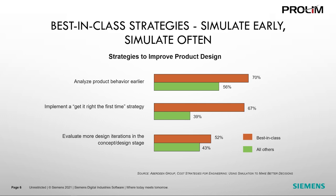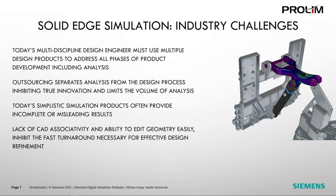Analysis of best-in-class performers indicates a strategic emphasis on using simulation to gain better insight into the behavior of the product. Introducing simulation at the beginning of the design process is a key differentiator for success. The best-in-class are also likely to implement a 'get it right the first time' strategy, which refers to the use of simulation throughout the design process to correct performance before any physical prototypes are built. Today's engineers must cover a multitude of tasks in all phases of product development, including analysis.